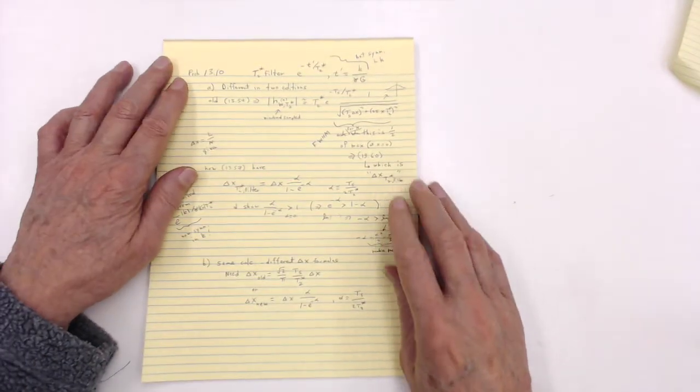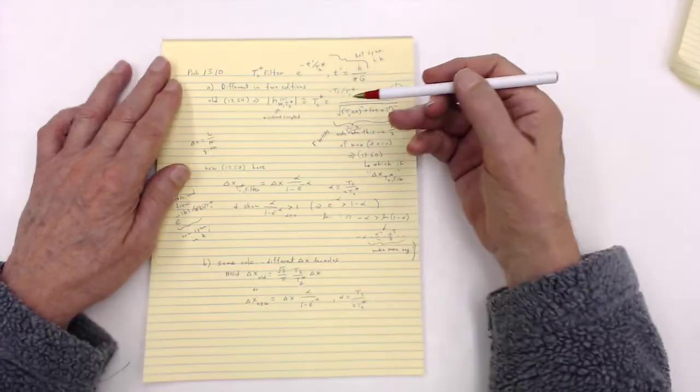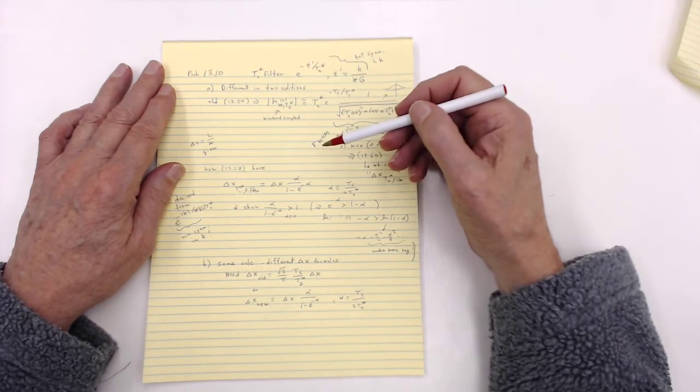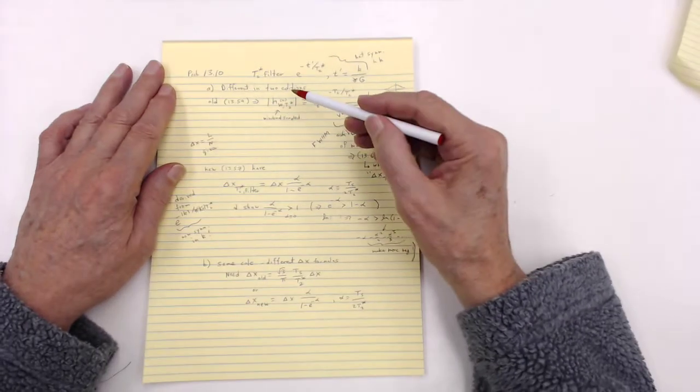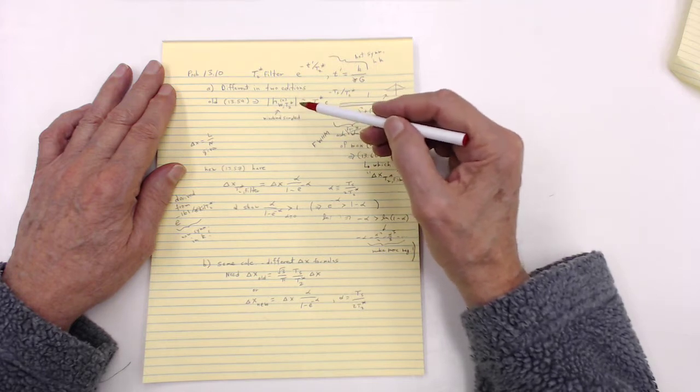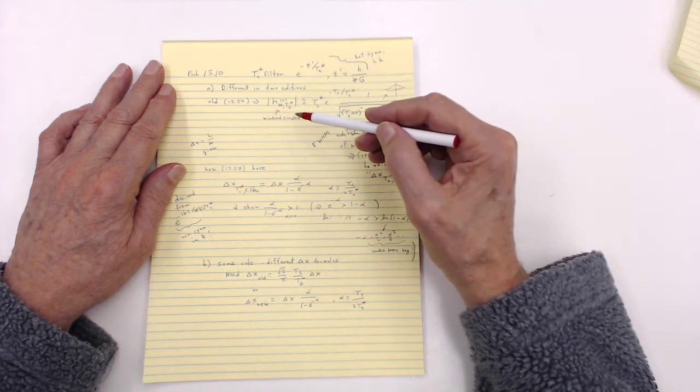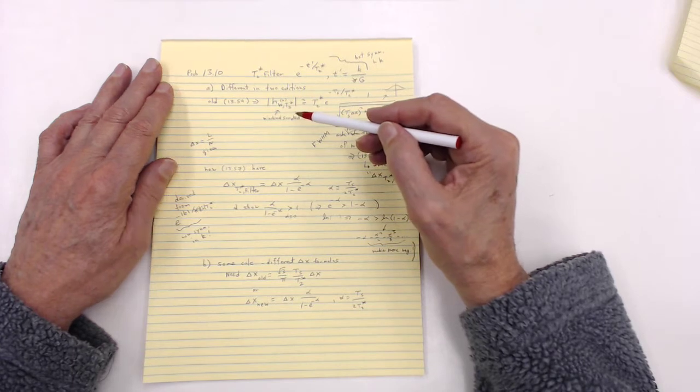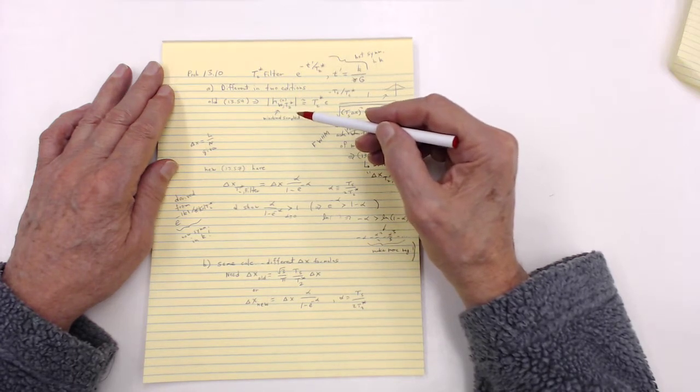Video help for problem 13.10. Now this is important. They're different in the two editions. The second edition, the new edition, has really improved it, fixed it, because there really wasn't a correct result in the first edition.